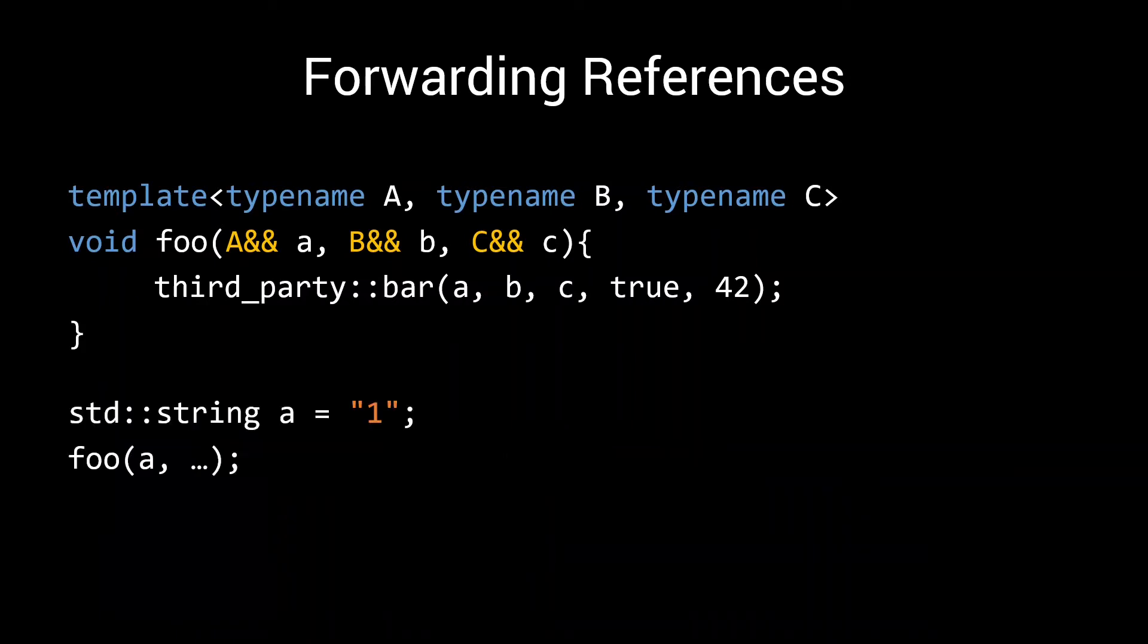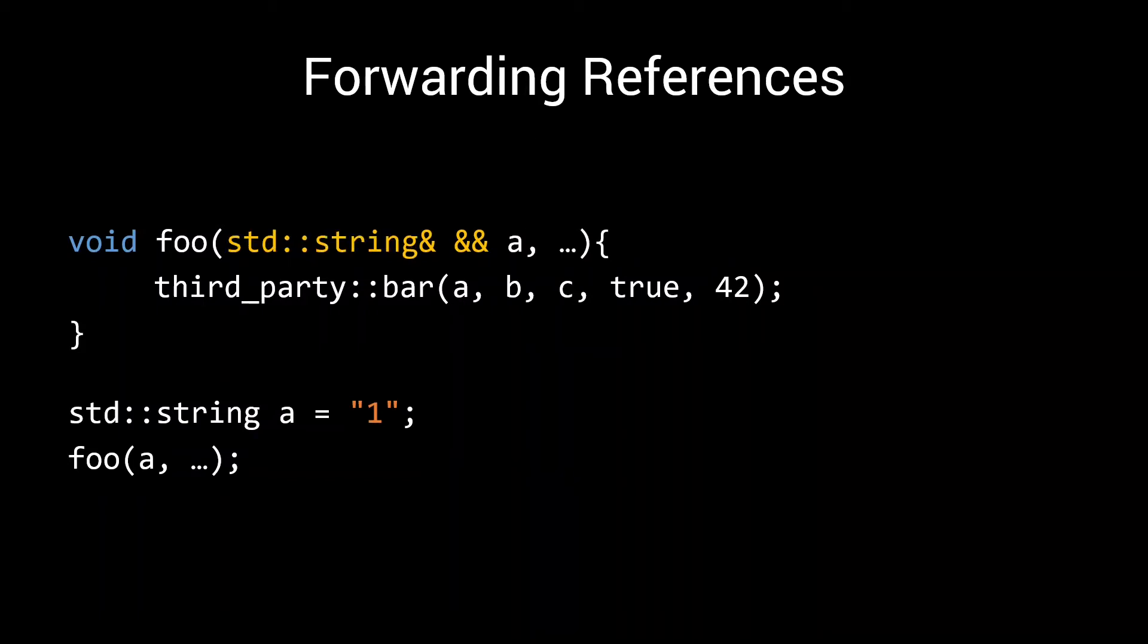Say we have a string a, we call foo with our a. Since our input is an l-value, the compiler, when deducing our template parameter big A, deduces an l-value reference to string. To prevent this video from getting too long, I will leave the exact reason for this deduction for a future video. But as a result, the compiler ends up with something like this while doing its type deduction for little a.